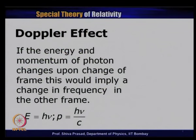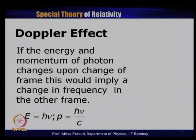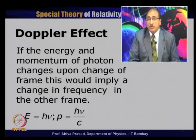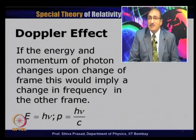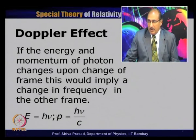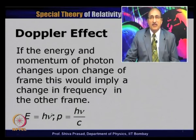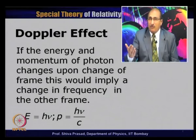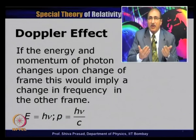Now let us discuss what we call the Doppler effect. If we change a frame of reference, the speed of light will not change — that is one of the postulates of relativity. But energy and momentum will get transformed; they change if the frame of reference changes. For a photon, E = hν and p = hν/c, so a change in energy or momentum implies a change in frequency. If I change my frame of reference, the frequency of the photon changes, though its speed has not. This change of frequency when going from one frame to another is called the Doppler effect.